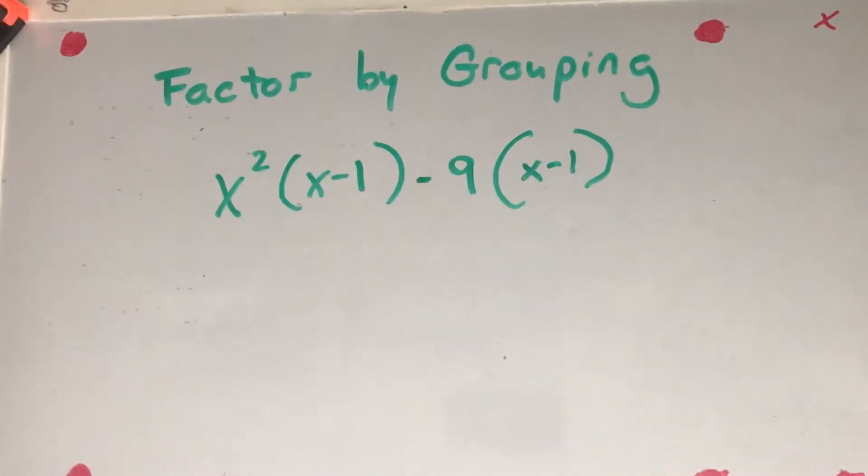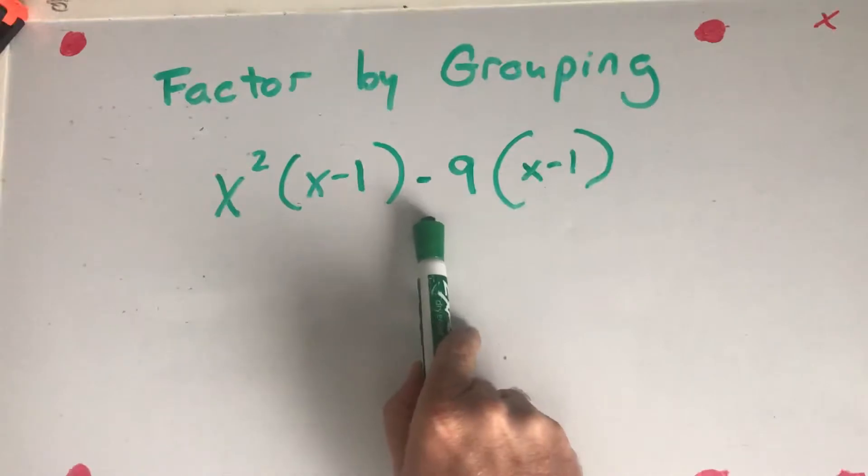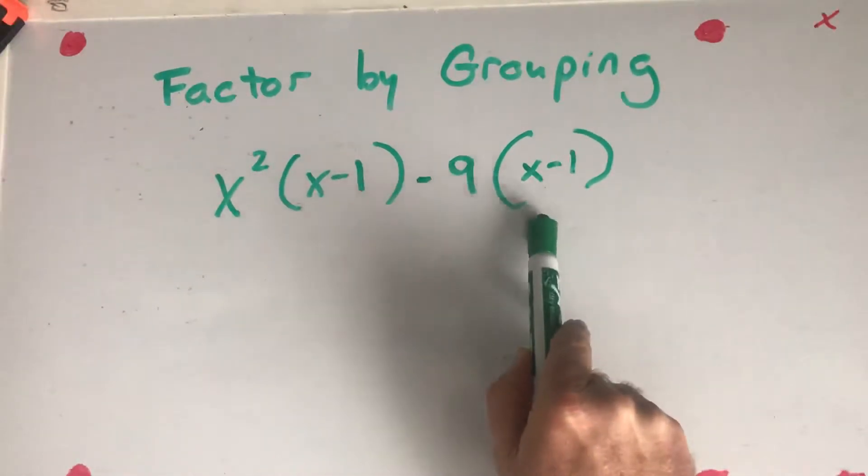OK, so we have this expression. We have x squared times (x minus 1) minus 9 times (x minus 1).